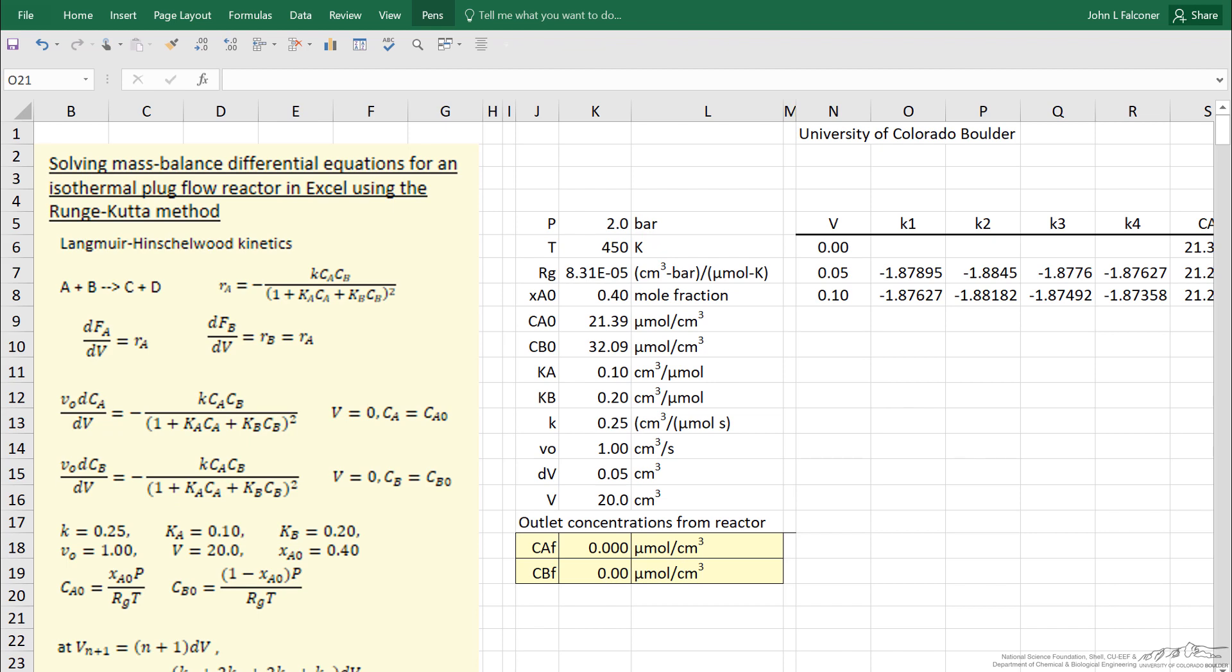I've now written the mass balances in terms of volumetric flow rate and concentration because there's no mole change and no temperature change for an isothermal reactor. So there's no volumetric flow rate change, which makes the equations a little easier to solve. We certainly would not have to do it this way—we could instead use molar flow rates and ideal gas law that accounts for the volumetric flow rate change.